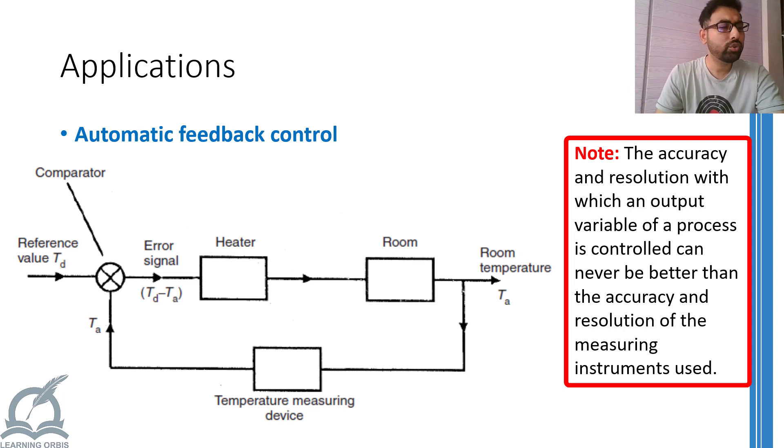However, if you used a cheaper temperature sensor that can measure temperature for example nearest to 3 degree Celsius that is 20 degree then 23 degree then 26 and then 29 and so on, then the fluctuations would also be of 3 degree or more.